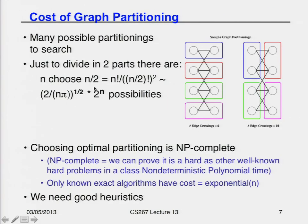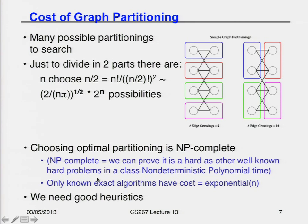Suppose I wanted to find the very best partitioning. How many partitions are there to search over? If I just want to divide the graph into two parts, there are n-choose-n/2 different ways — a combinatorially large number. Nobody knows an algorithm that doesn't cost exponential time; that's why it's called NP-complete. Even dividing into two is NP-complete. So that's why we're going to be working on heuristics for the rest of this lecture.